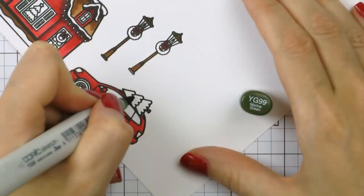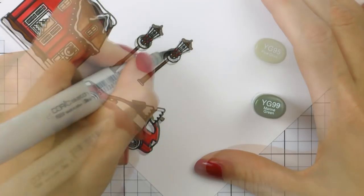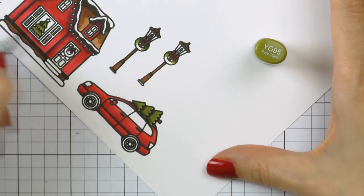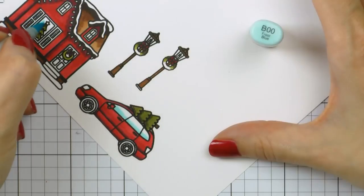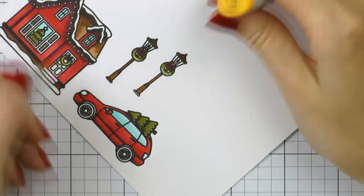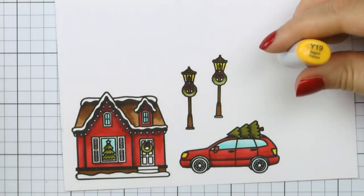To color the Christmas trees and the wreath on the lampposts I'm using YG99, YG95, and YG93. Again, this is one of my go-to color combos for greenery on a holiday card. I also used B00 and B000 to color the windows as well as Y19 to color the lights on the car.